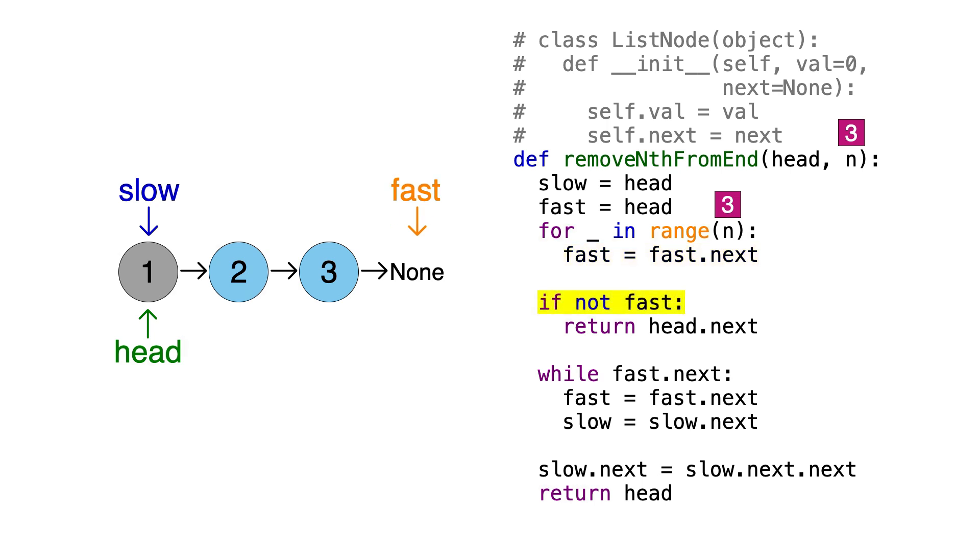Now when we check this condition, since fast points to none, this condition is true. We need to check for this, because if we don't, then this line here would cause issues, since none doesn't have a next attribute. So since fast is none, we now know that we need to delete the head node, and we can do that by simply returning head.next, which points to node 2. So the linked list we return would start from node 2, then point to node 3. And we're done.